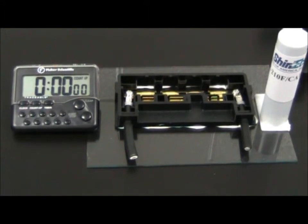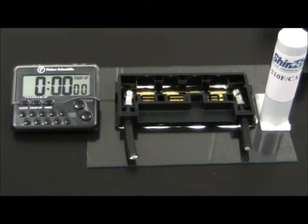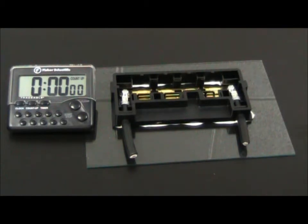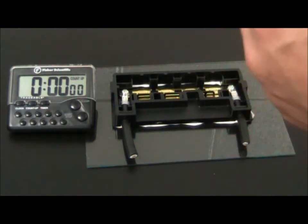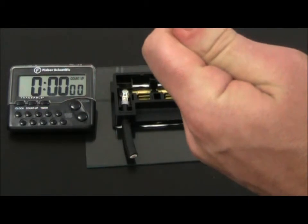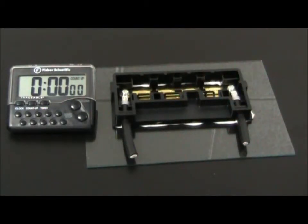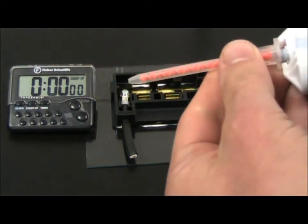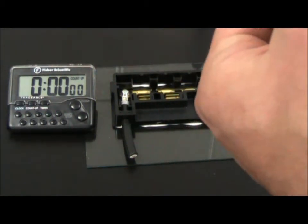So let's now prepare to dispense the KE210 potting material. First we will prime the cartridge to eliminate any air inside of it. We'll take some of the material just making sure that there's no air left in there. Then we'll attach the static mixer to the end of the cartridge.